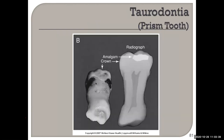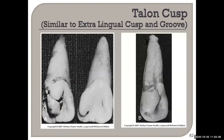Taurodonism, or prism tooth, can be seen radiographically. Talon cusps have a special name — they are an extra lingual cusp; when on an anterior tooth it's called a talon cusp and can be extremely large.